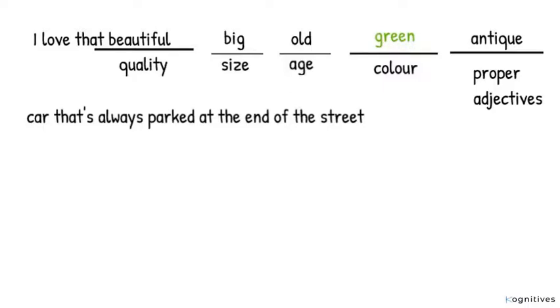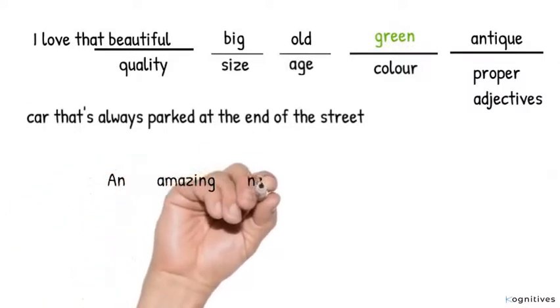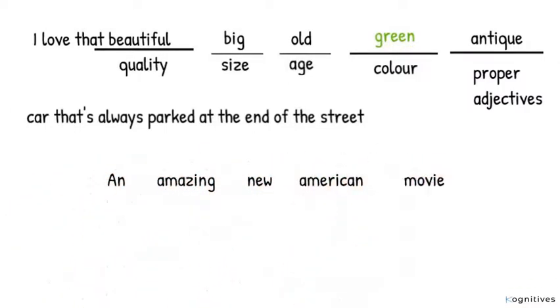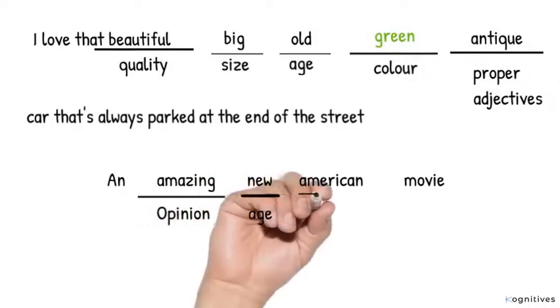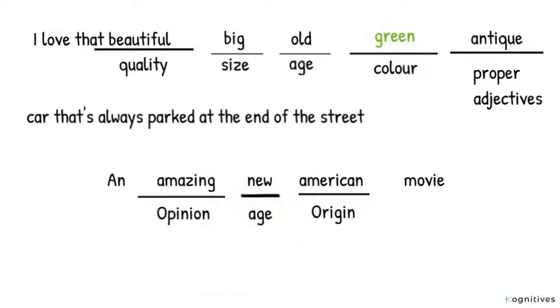Again, you cannot place old before big. Neither can you place big before beautiful. It has to appear in the right order. Number three example: An amazing new American movie. Amazing is opinion and it comes before new, which is age, and that comes before American, which is origin. That is the correct order this adjective should appear.